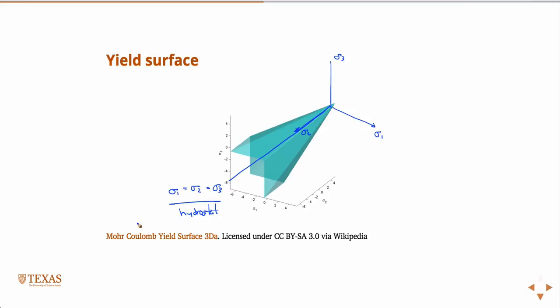So as long as I'm inside the cone, I'm elastic. This also implies — because this goes on to infinity — that no matter how hard I squeeze a rock, if I squeeze it isotropically, if I move straight down this line by just applying more and more pressure to the sides equally, I never fail the rock, I never permanently deform it in any way.